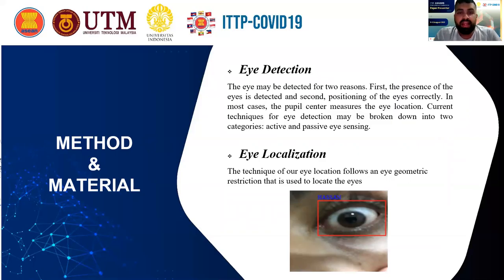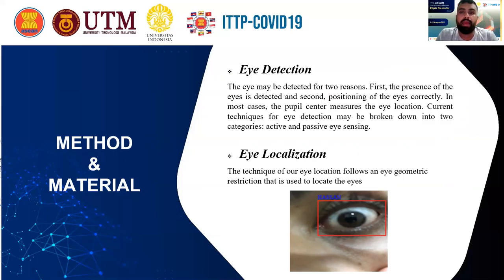Then after that, eye detection. The eye may be detected for two reasons: firstly, the presence of the eye is detected, and secondly, the position of the eye is located correctly. In most cases, the pupil center measures the eye location. Current techniques for eye detection may be broken down into two categories: active eye sensing and passive eye sensing.